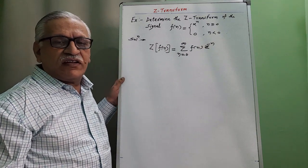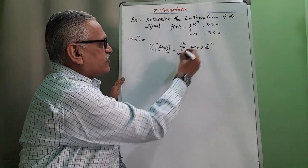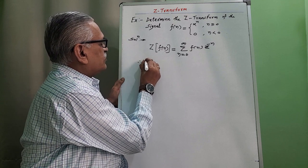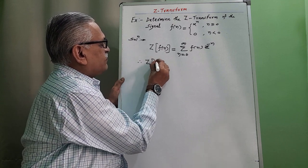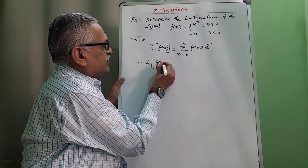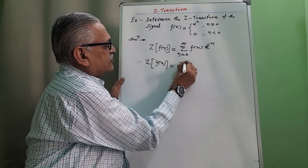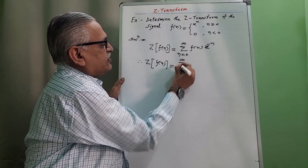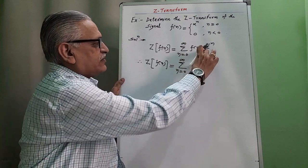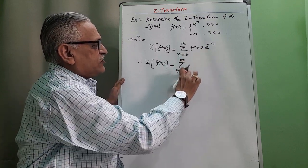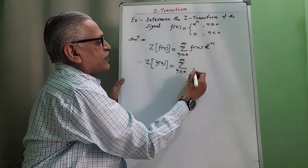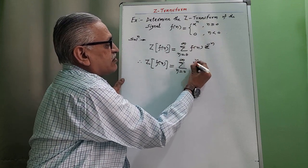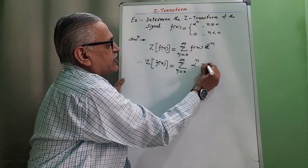Using this formula, we can determine the Z-transform. Therefore, Z-transform of the given function f(n) is summation from n equals 0 to infinity. Substituting the value of f(n) for that range 0 to infinity, its value is alpha raised to n times Z raised to minus n.